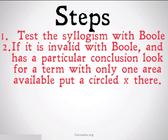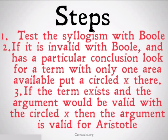That circled X means that it's dependent on — conditional on — that thing existing. If the term that had only one area open exists, and the argument would be valid with the circled X, then the argument is going to be valid for Aristotle. Let's take a look at some examples.